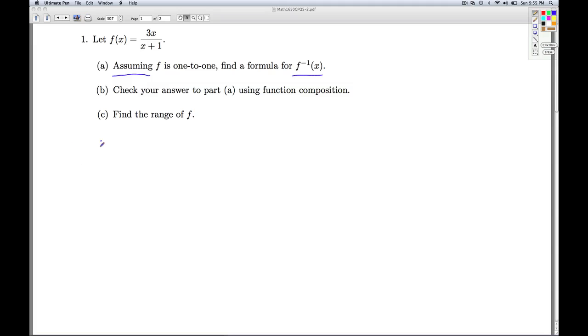Well, the first step is we write the equation y equals f of x. So in this case, that's y equals 3x over x plus 1. So this expresses the relationship as x as the input and y as the output. So the inverse function is going to reverse that relationship. We're going to switch the x's and y's. So now it becomes x equals 3y over y plus 1. And now I've got to solve this for y. So the first thing I'll do is multiply both sides by the denominator y plus 1.